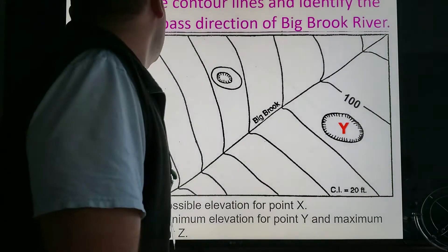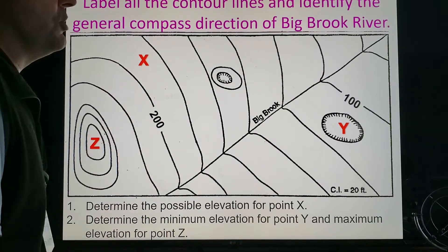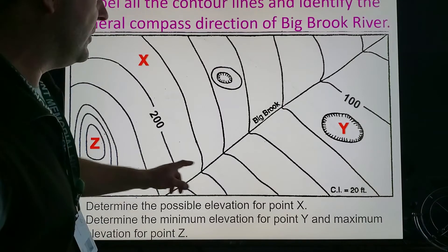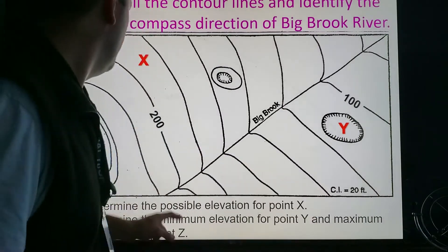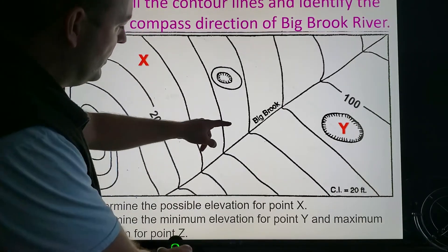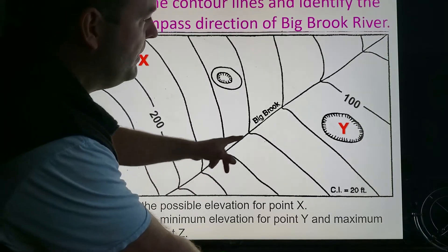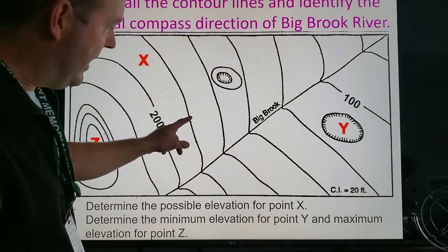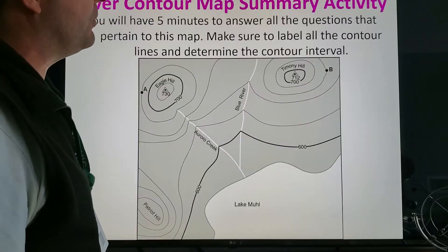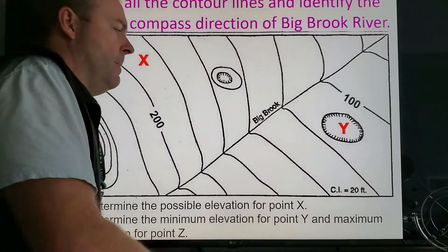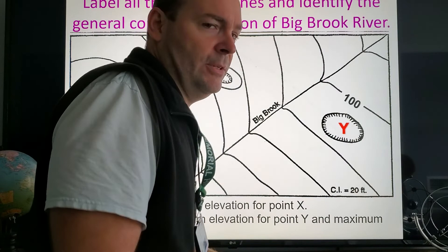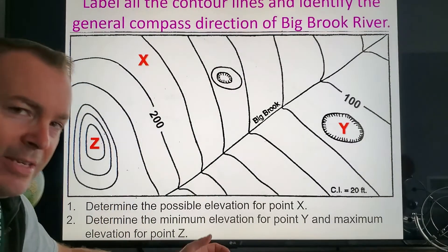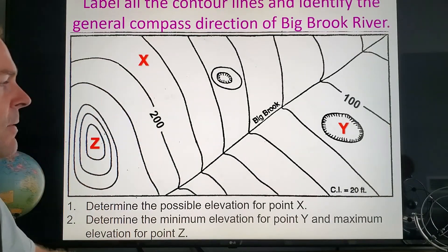Label all the contour lines and identify the general compass direction of the Big Brook River. Well if you label all lines the interval is 20. This is 200, this is pointing uphill, this must be downhill, so 200, 180, 160, et cetera. Get them all in there and we'll go over those of course in the lesson. A couple of questions there—make sure you answer all those, take your time, hit pause, and we'll go over those in the lesson.